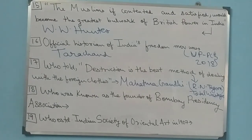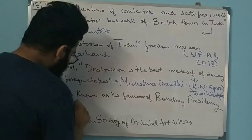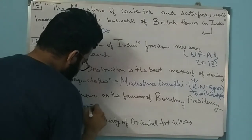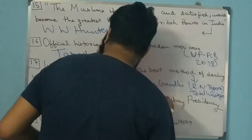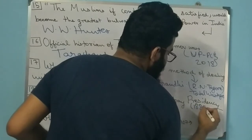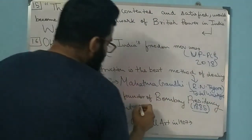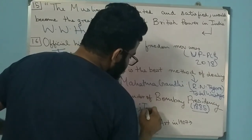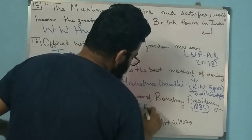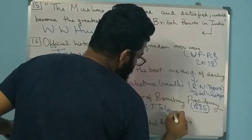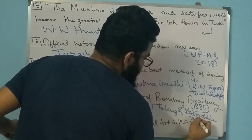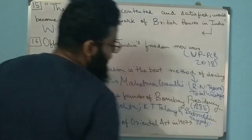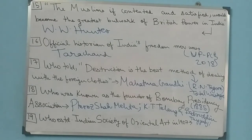Question 18: Who was known as the founder of the Bombay Presidency Association? The founder's name is Pherozeshah Mehta. The Bombay Presidency Association was founded in 1885 - the same year as INC. Two other famous leaders associated with it are K.T. Telang and Badruddin Tyabji. Badruddin Tyabji is also known as the first Muslim President of INC.